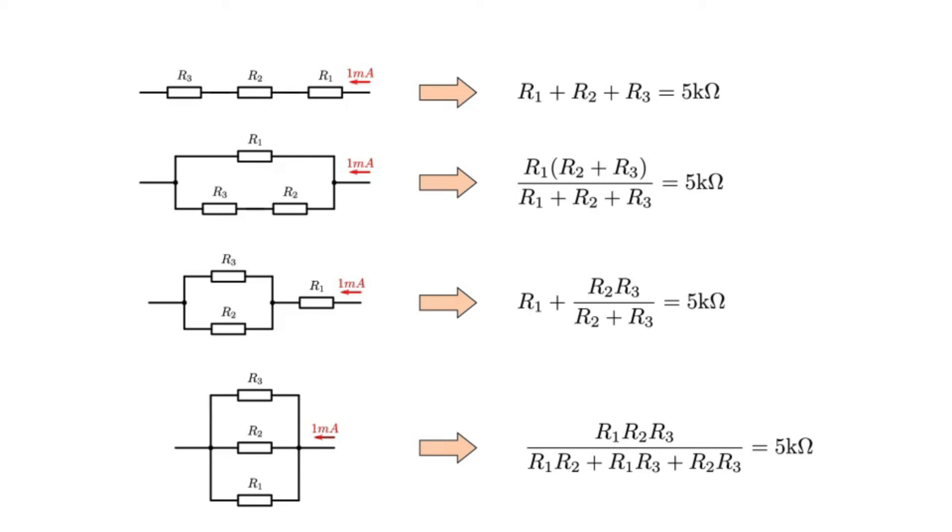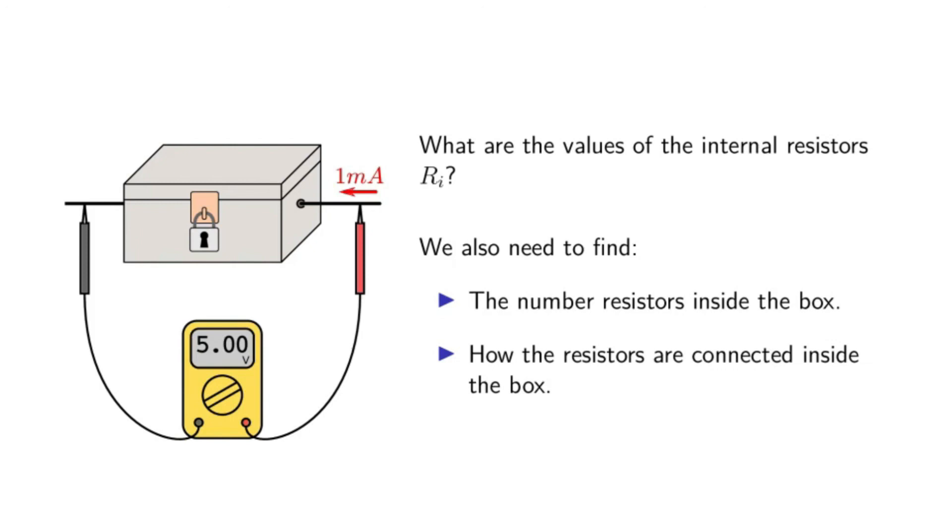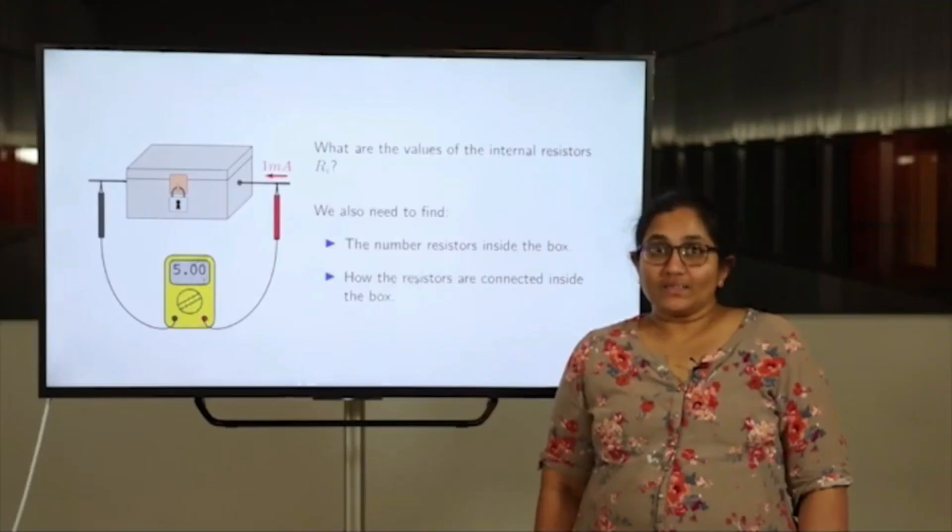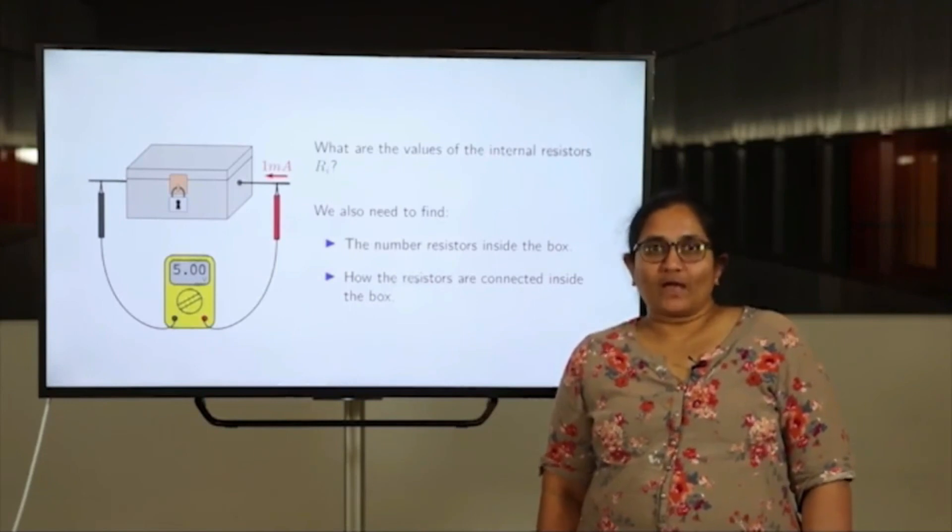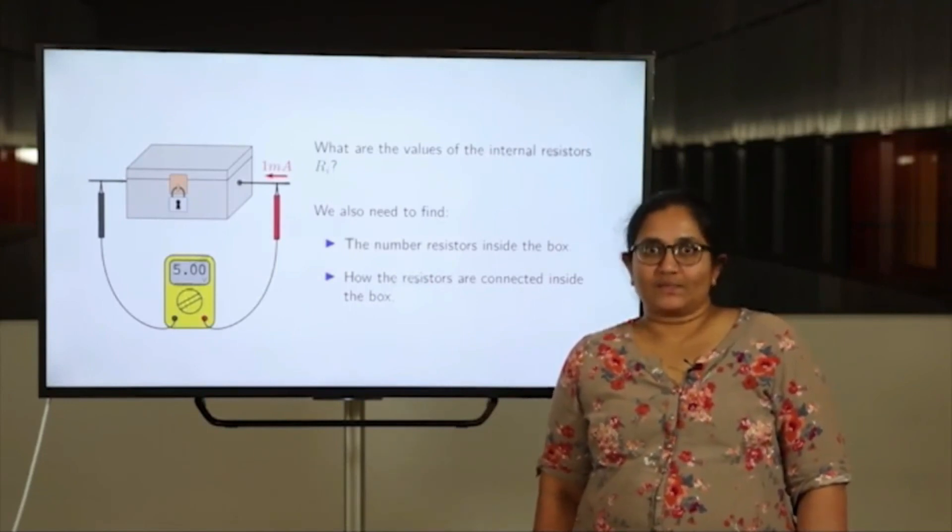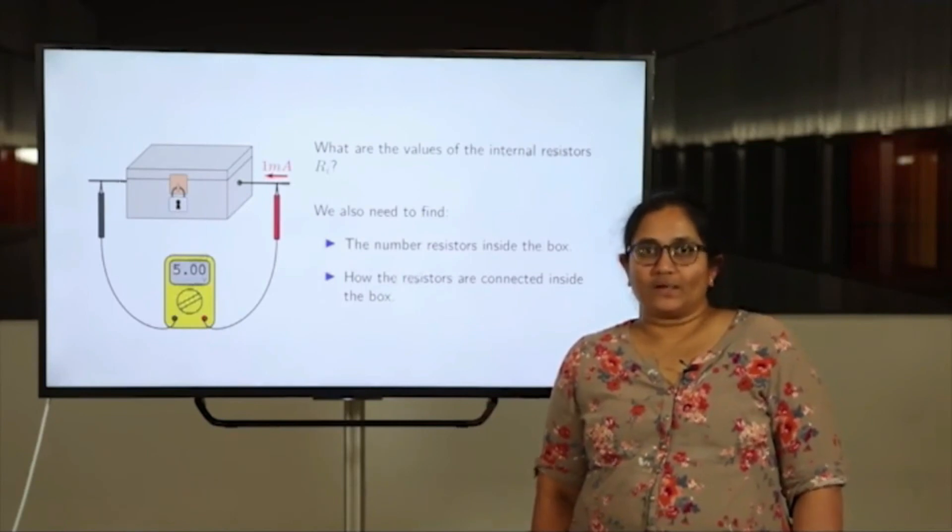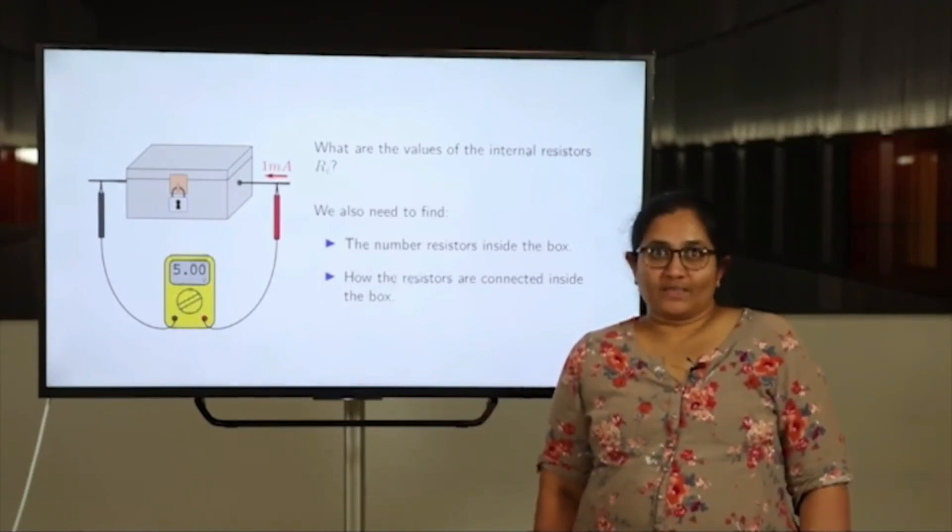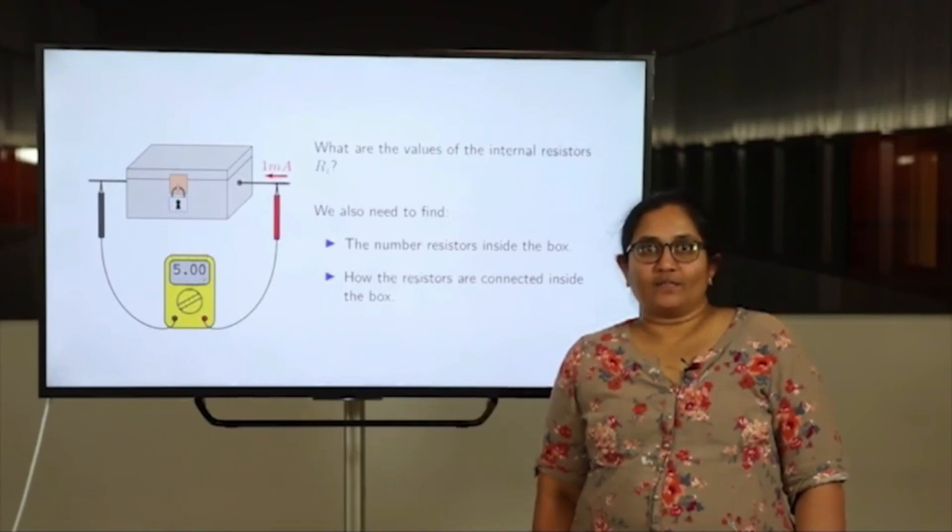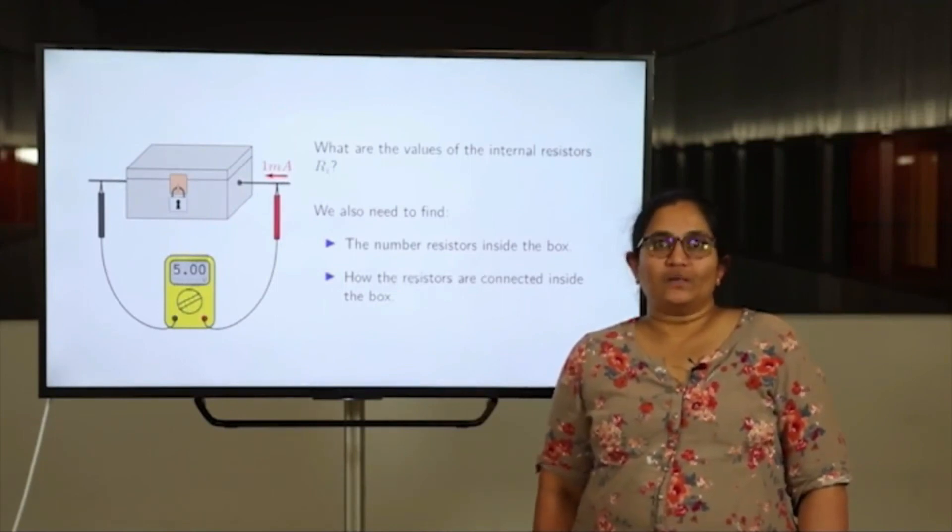We can clearly see that the problem becomes challenging very quickly, even with a small number of resistors. If we want to find the values of the internal resistors inside a box without opening it, we also need to find the number of resistors inside the box and how the resistors are connected inside the box. In summary, if we want to know what the values of the internal resistances are, we need to know something about the internal arrangement. Otherwise, all we can say is the net effect that we call equivalent resistance of the association.